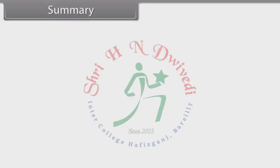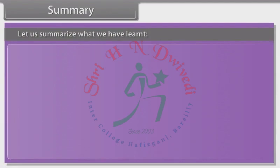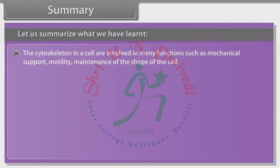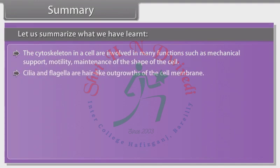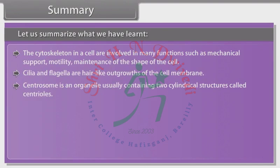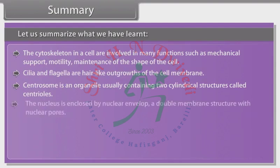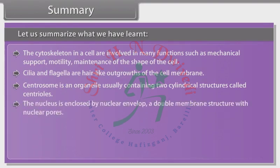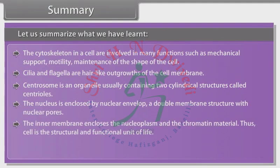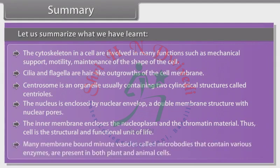Summary. The cytoskeleton in a cell is involved in many functions such as mechanical support, motility, and maintenance of the shape of the cell. Cilia and flagella are hair-like outgrowths of the cell membrane. Centrosome is an organelle usually containing two cylindrical structures called centrioles. The nucleus is enclosed by a nuclear envelope, a double membrane structure with nuclear pores. The inner membrane encloses the nucleoplasm and the chromatin material. Cell is the structural and functional unit of life. Many membrane-bound minute vesicles called microbodies, that contain various enzymes, are present in both plant and animal cells.